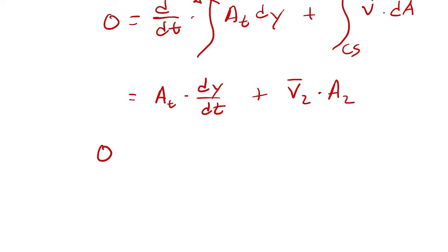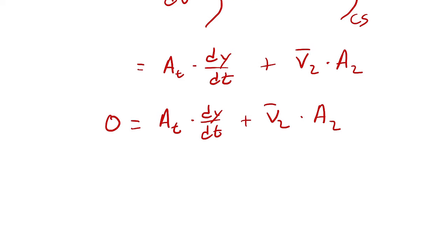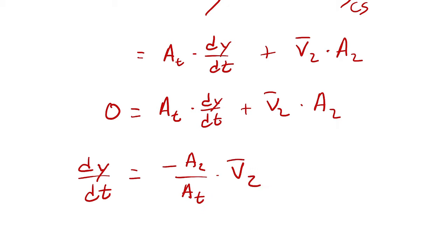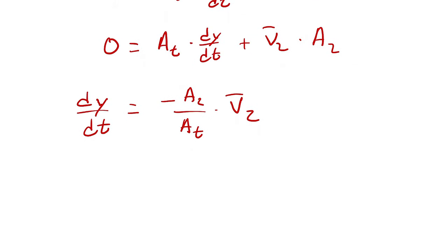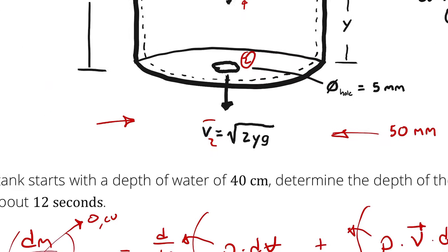So I have 0 equals A_t times dy/dt plus the velocity, which is a function of y, times area A_2. Writing this as dy/dt by bringing the A_t term over to the left gives: dy/dt equals negative (A_2 / A_t) times v̄_2. Then I substitute in the equation for the average velocity at state 2.